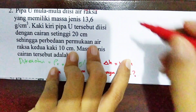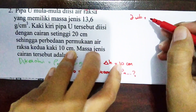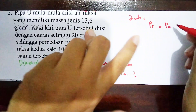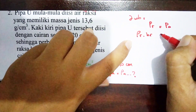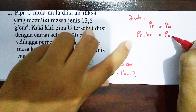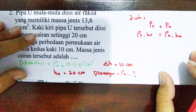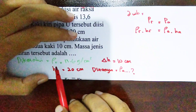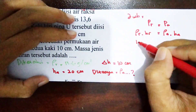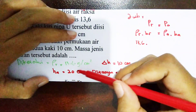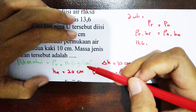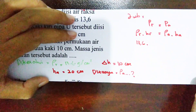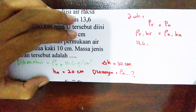Jawab: ada raksa dan cairan yang lain, berarti P_raksa sama dengan P_cairan lain. Rho raksa × H_raksa sama dengan Rho_A × H_A. Untuk ρ raksa sudah diketahui 13,6. Kita tidak perlu mengubah satuan karena di sini satuannya sudah cm dan massa jenis juga sudah gram per cm pangkat 3, jadi tanpa perubahan satuan. Sedangkan di kasus soal yang tadi, satuannya meter pangkat 3 untuk massa jenis, maka tingginya harus diubah ke meter terlebih dahulu.